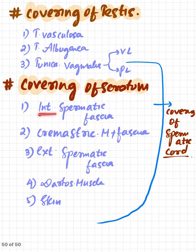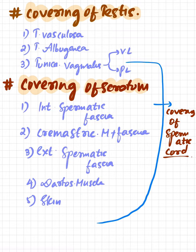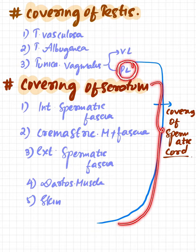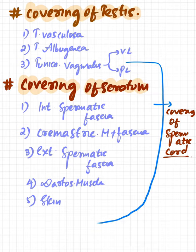The coverings of the scrotum are: internal spermatic fascia, cremasteric fascia and muscle, external spermatic fascia, dartos muscle, and skin. All the layers covering the scrotum, including the parietal layer of the tunica vaginalis, also serve as the coverings of the spermatic cord. This concludes the topic of the inguinal canal — its introduction, boundaries, contents, and details of the spermatic cord.